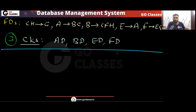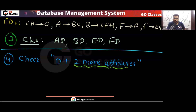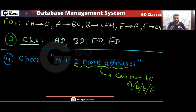But we cannot stop now. We have to check D plus two more attributes. In these two attributes, we cannot take A, B, E, or F — because those already form candidate keys with D. So what remains? We can only take combinations from C, G, H.